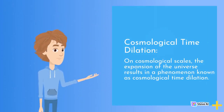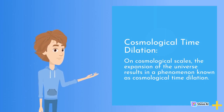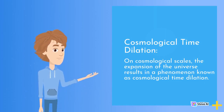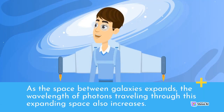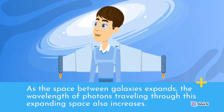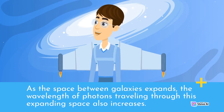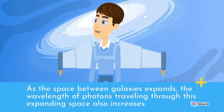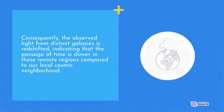Cosmological Time Dilation: On cosmological scales, the expansion of the universe results in a phenomenon known as cosmological time dilation. As the space between galaxies expands, the wavelength of photons traveling through this expanding space also increases. Consequently, the observed light from distant galaxies is redshifted, indicating that the passage of time is slower in these remote regions compared to our local cosmic neighborhood.